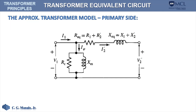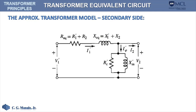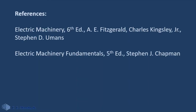This is the approximate model of the transformer referred to the primary side. Notice that we have moved the shunt circuit to the front, and that makes the determination of the quantities much easier. This is the corresponding approximate model for the secondary side. In our next video, we'll be going through examples involving the equivalent circuits of transformers.